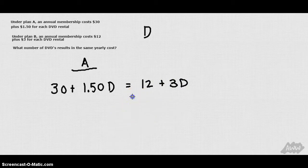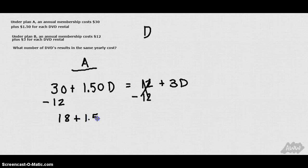So let's solve this. We'll move all of our like terms to the same side as each other. We get $30 minus $12 which is $18 plus $1.50D equals $3D.